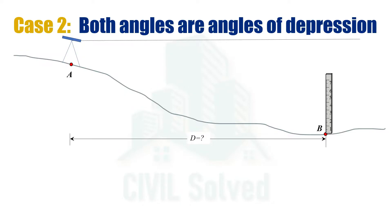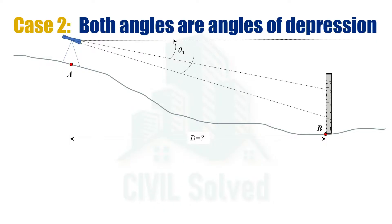This is the axis of the instrument. Since both angles are angles of depression, the first angle of depression is theta 1 and the second angle of depression is theta 2. The difference of the staff readings taken at theta 1 and theta 2 is S. The distance between the axis of instrument and the point where the staff reading is taken at theta 2 is V.